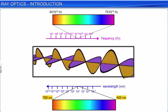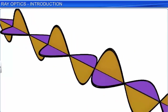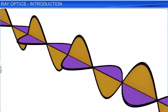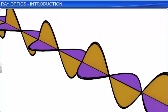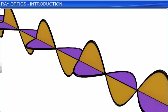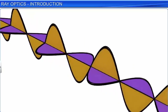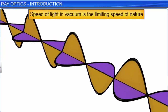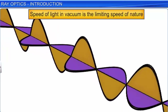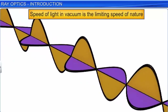All electromagnetic waves including light waves travel in vacuum with an approximate speed of 3×10⁸ meters per second. This is in fact the limiting speed of nature. That is, in a vacuum, no other wave or particle can travel with a speed greater than the speed of light.